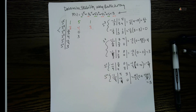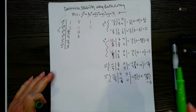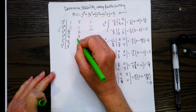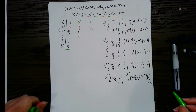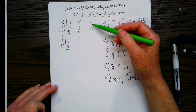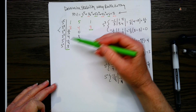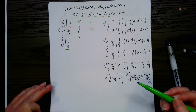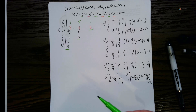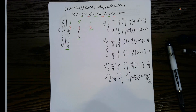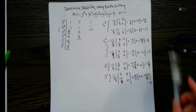Before we determine stability, notice a pattern: all the last elements of the even rows are three. The last element on the second row equals the last element on every other even row. This always happens, so you can use that pattern to save time — you don't have to calculate all those determinants for the final elements.